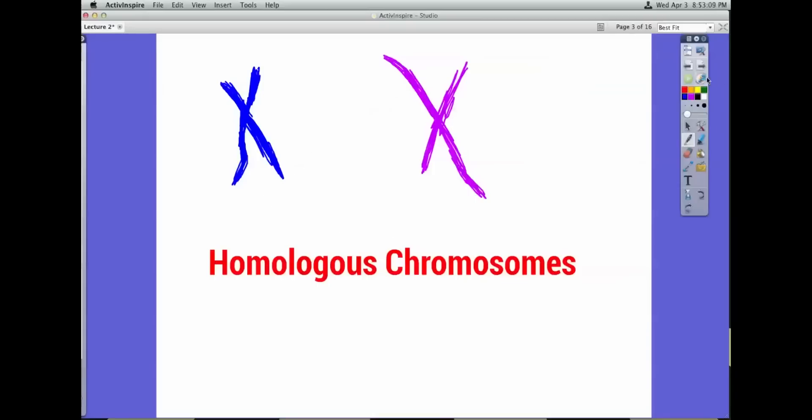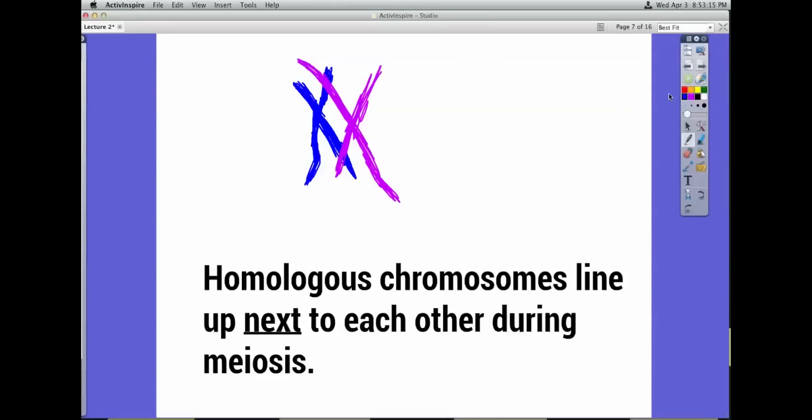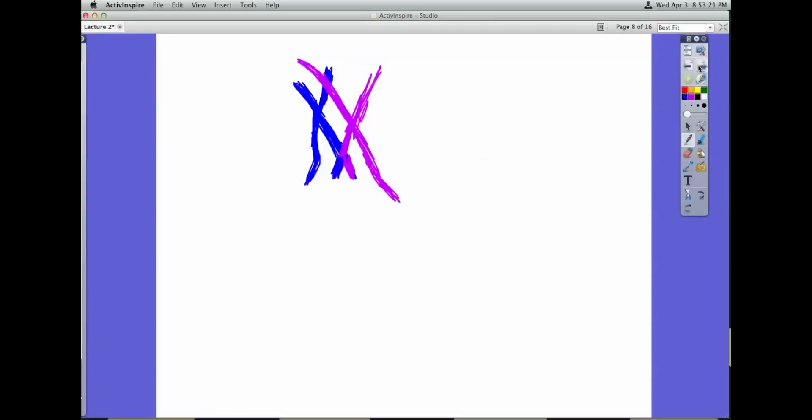Next we need to talk about homologous chromosomes. Homologous chromosomes are chromosomes that line up like this during meiosis. They line up right next to each other during meiosis and sometimes if you look closely at those colors in the middle right there, they switch. You can see that the blue kind of went on the purple and the purple kind of went on the blue.